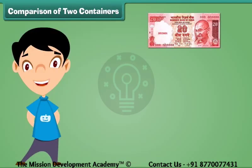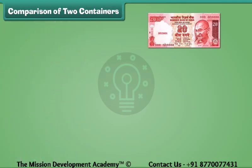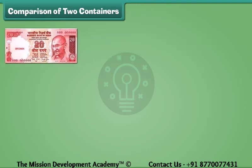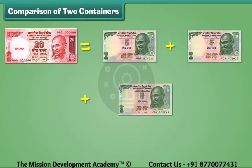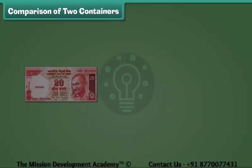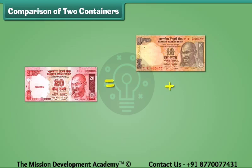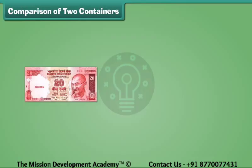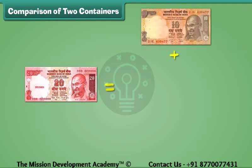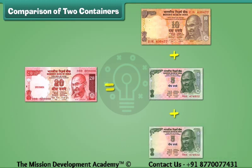This is a 20 rupee note. A 20 rupees note is equal to the sum of 4 five-rupee notes. A 20 rupees note is equal to the sum of 2 ten-rupee notes. A 20 rupees note is also equal to the sum of 1 ten-rupee note and 2 five-rupee notes.